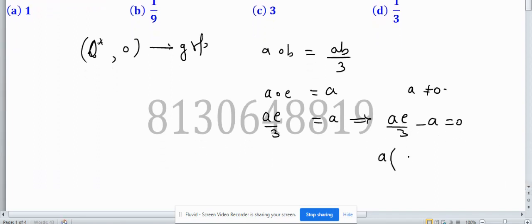We can take common because these are equations in rational numbers. Taking a common, we get a(e/3 minus 1) equals 0, and since a is nonzero, e/3 minus 1 equals 0. This implies that e equals 3, so the identity element is 3. Now find the inverse of 9.